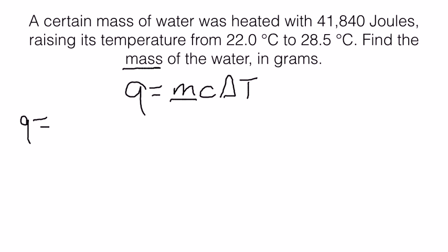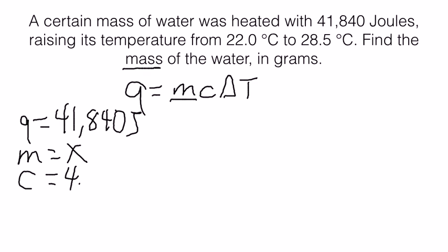So we need to write out what we know. Q is equal to 41,840 joules. Our mass is equal to X, since that is what we're solving for. Our C for water, the specific heat of water, is 4.184 joules per gram degrees Celsius.